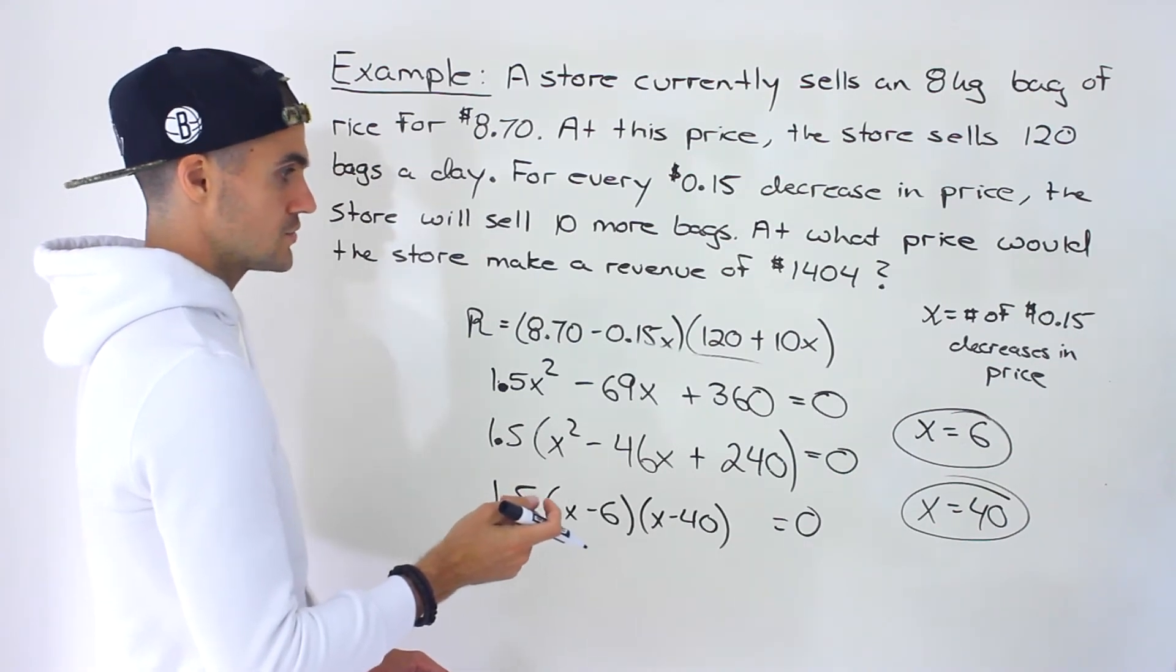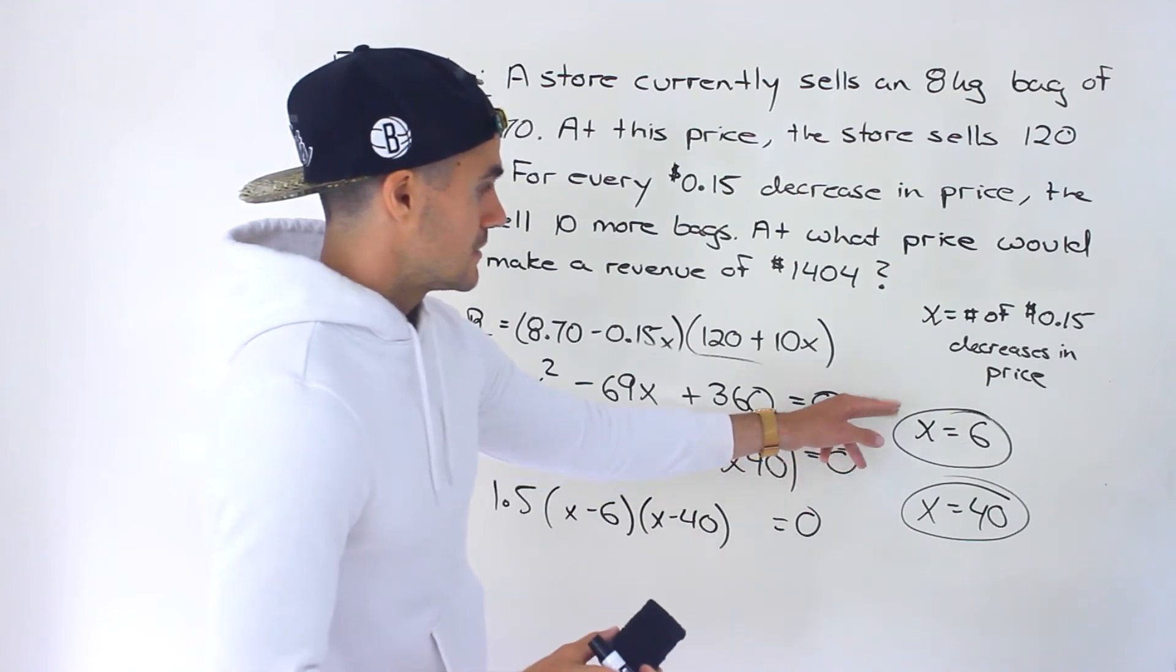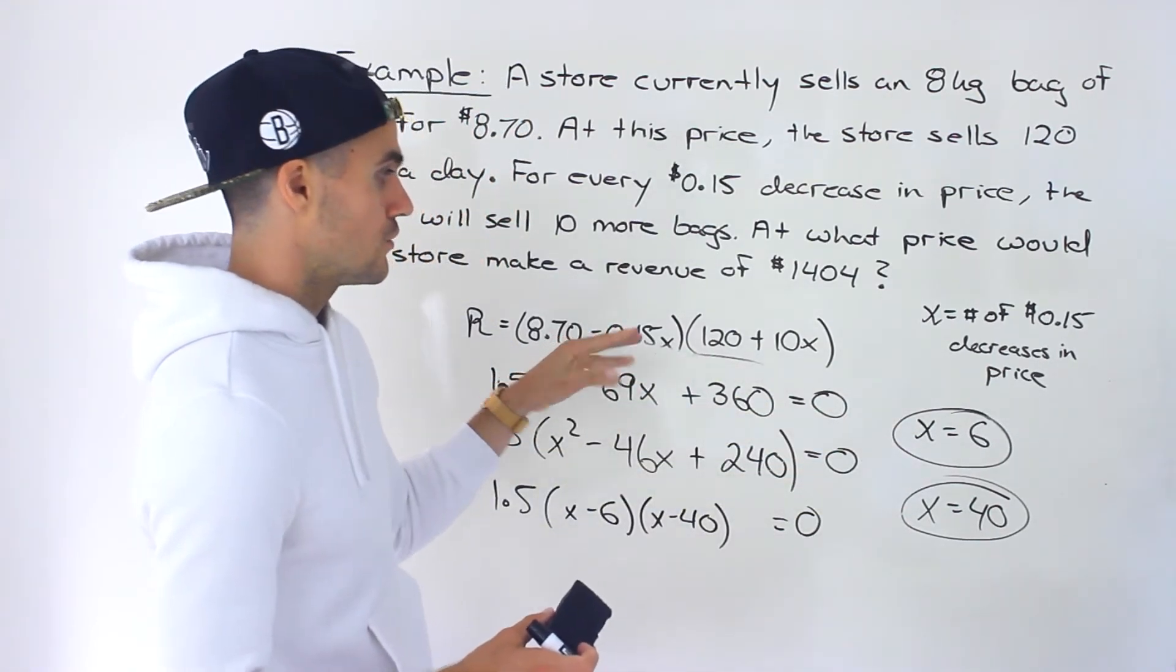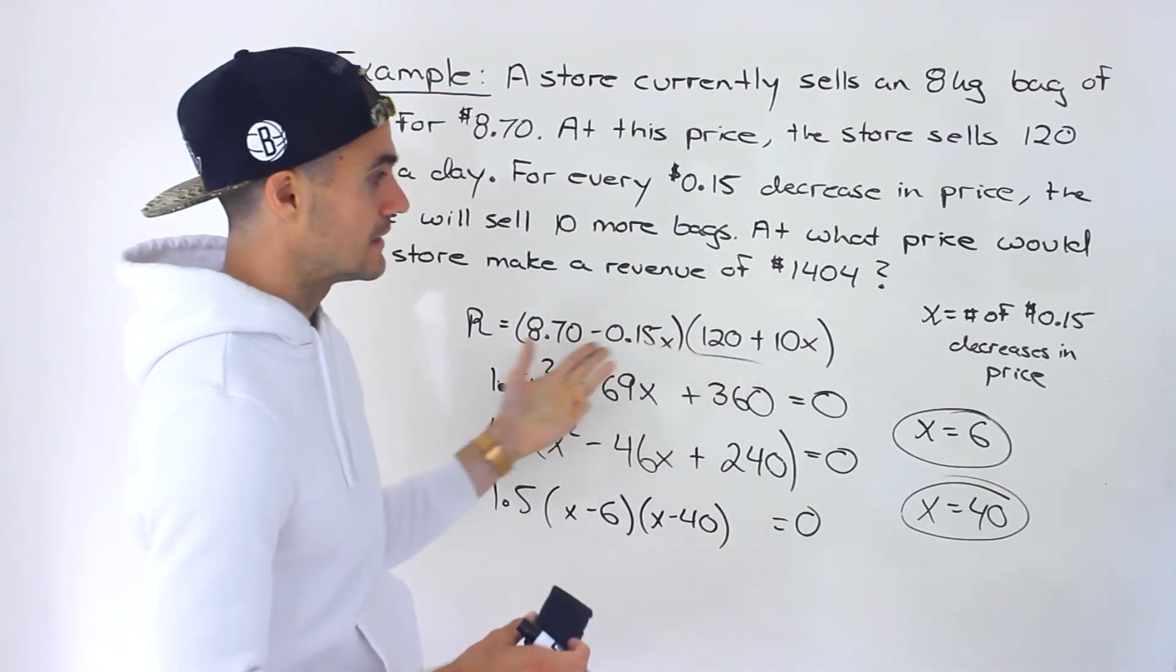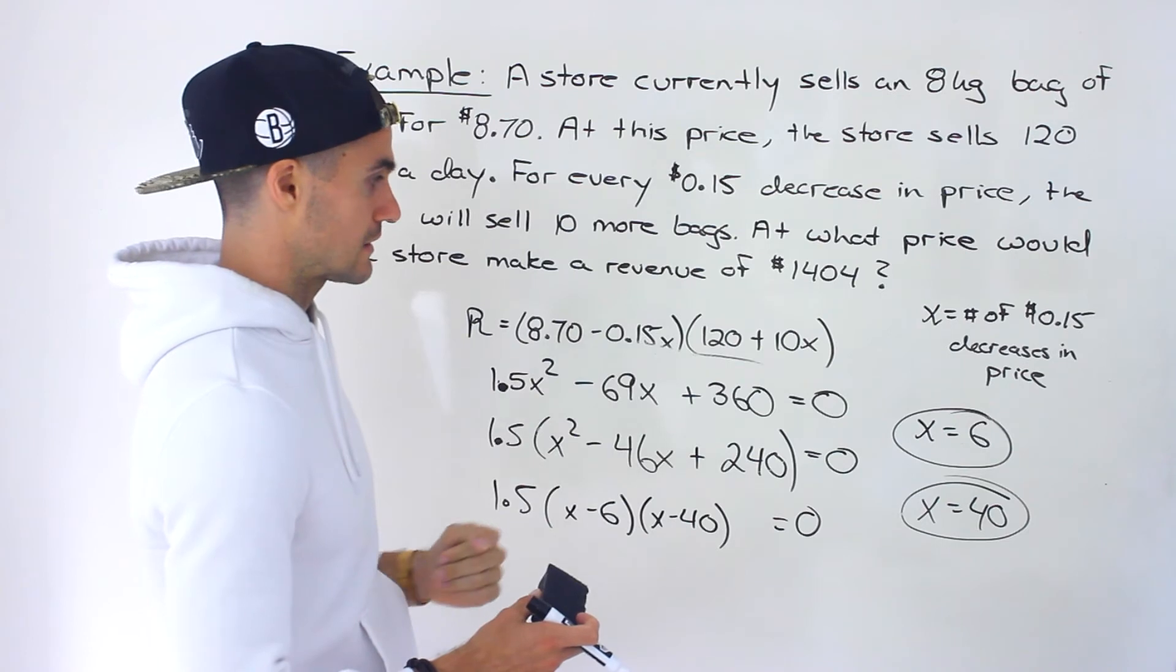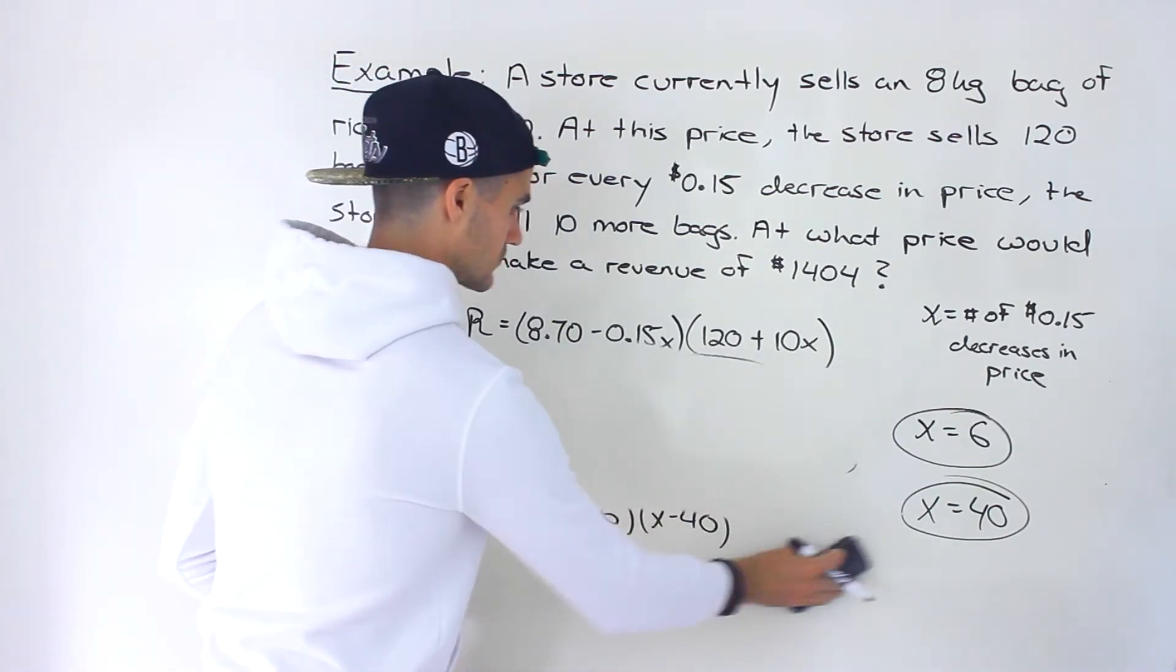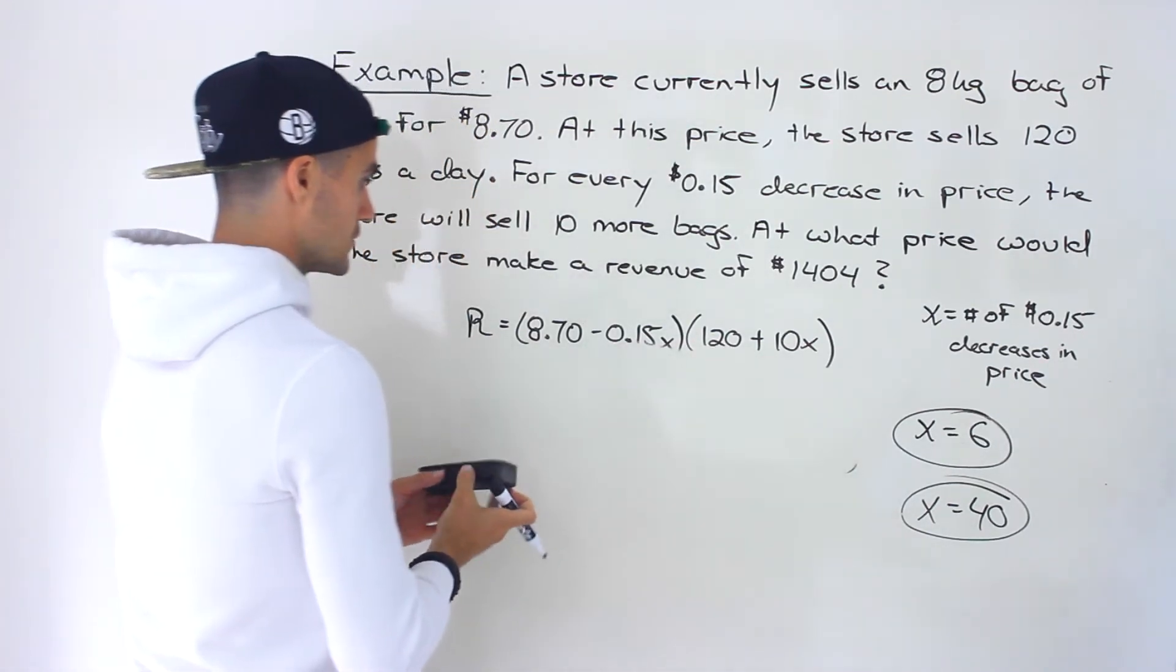So notice that the two solutions that we get are x is 6, x is 40. And so what we want to do is make sure we take these and plug them back into the word problem to make sure that it makes sense, like we're not getting any negative prices or anything like that. And if we do plug those in, we wouldn't get any negative values.